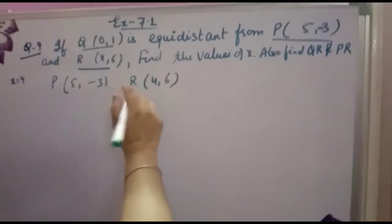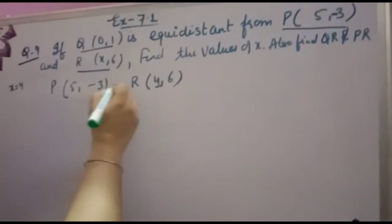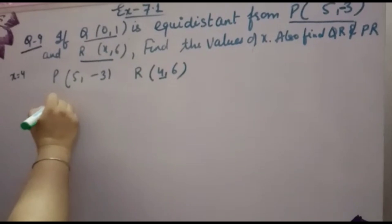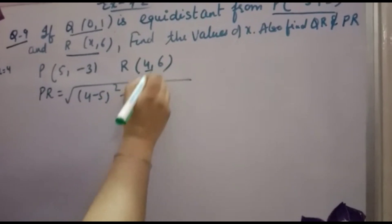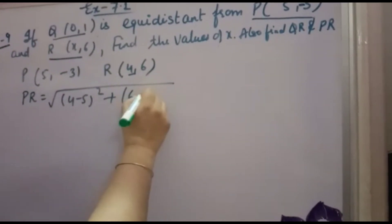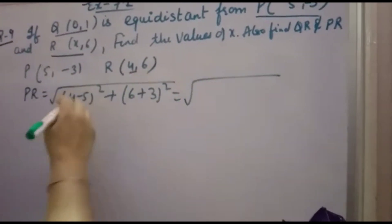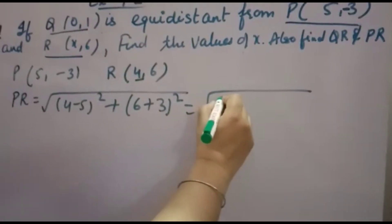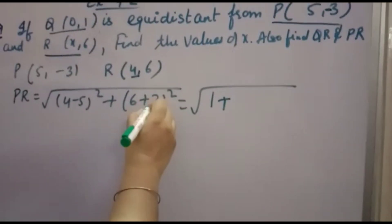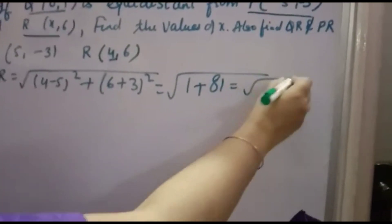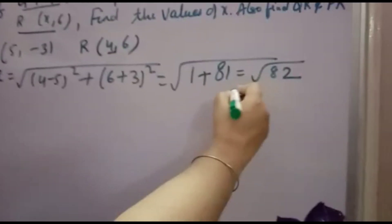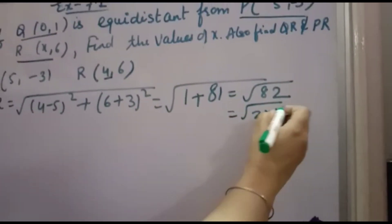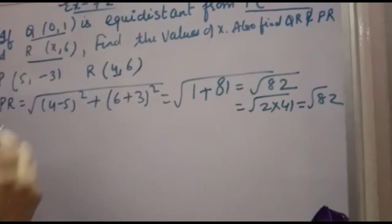Now to find PR where X = 4, so R = (4, 6) and P = (5, −3). This is X1, Y1, X2, Y2. PR = √((4−5)² + (6−(−3))²) = √((−1)² + 9²) = √(1 + 81) = √82. You can write root 82 as it is, since 82 = 2 × 41.